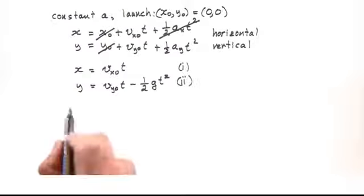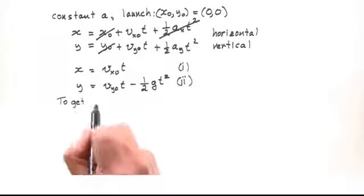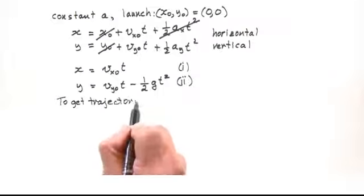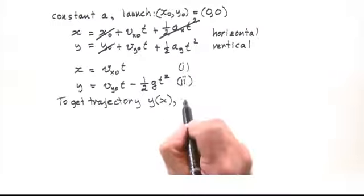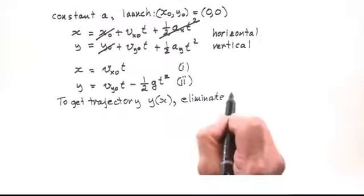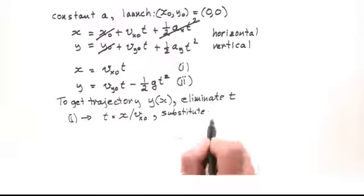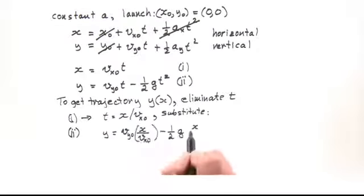That's two equations, but we want the trajectory y of x, so we can rearrange equation 1 to eliminate t. Substitute for t in equation 2 gives this equation for y as a function of x.